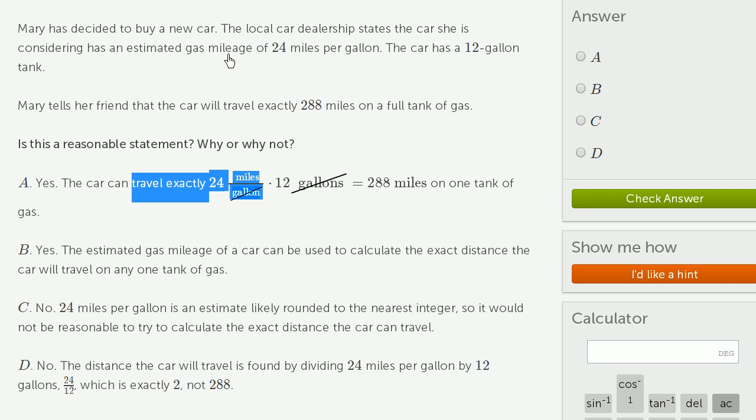In the estimate, first of all, they might have rounded it. When they did the tests, it might have been 23.9, it might have even been 23.6 miles per gallon, or it might have been 24.4 miles per gallon. That's a pretty big difference. You definitely wouldn't get to exactly 288 miles.